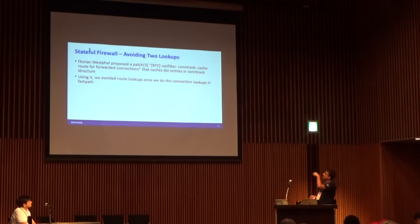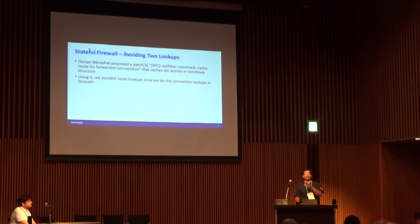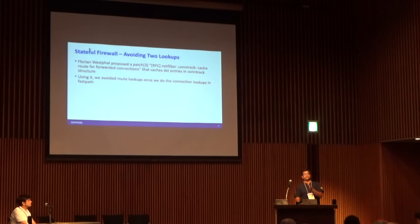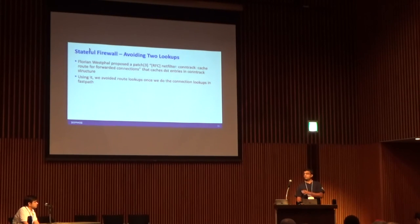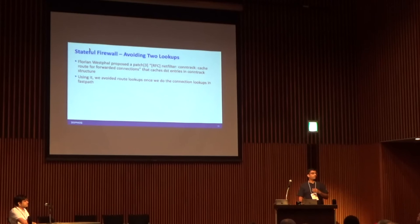One more thing we added: Florian proposed a patch where, on the fast path, we have two lookups — a conntrack lookup and a route lookup. To avoid two lookups, we use this patch where the routing DST entries are cached in the conntrack entry. Then subsequently you are not required to do the route lookup — when you do the conntrack lookup you already have those entries ready. This patch is not yet upstream, but I request Florian to push it because it helped a lot in this case.